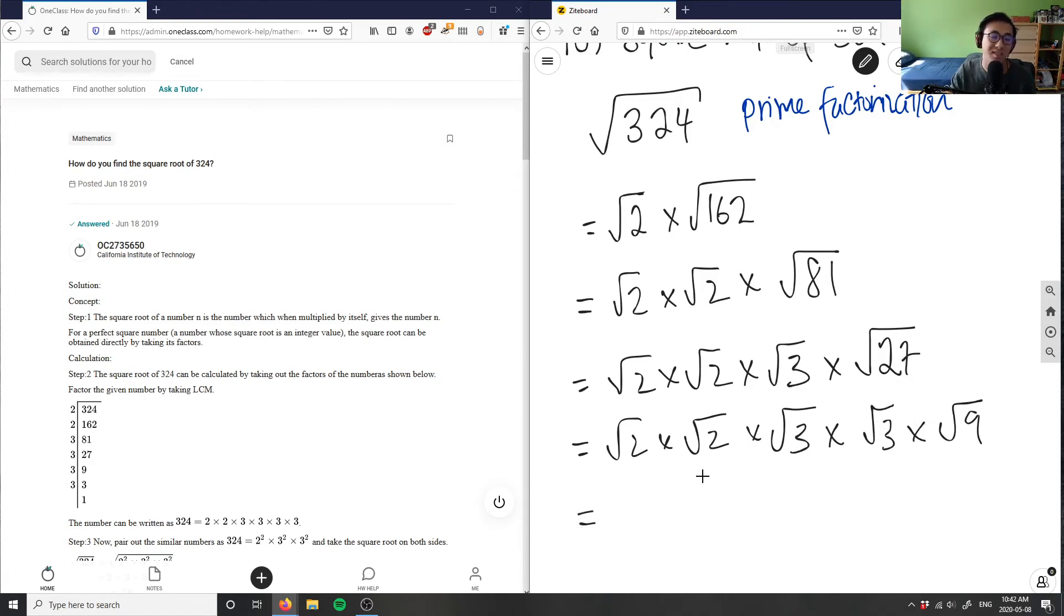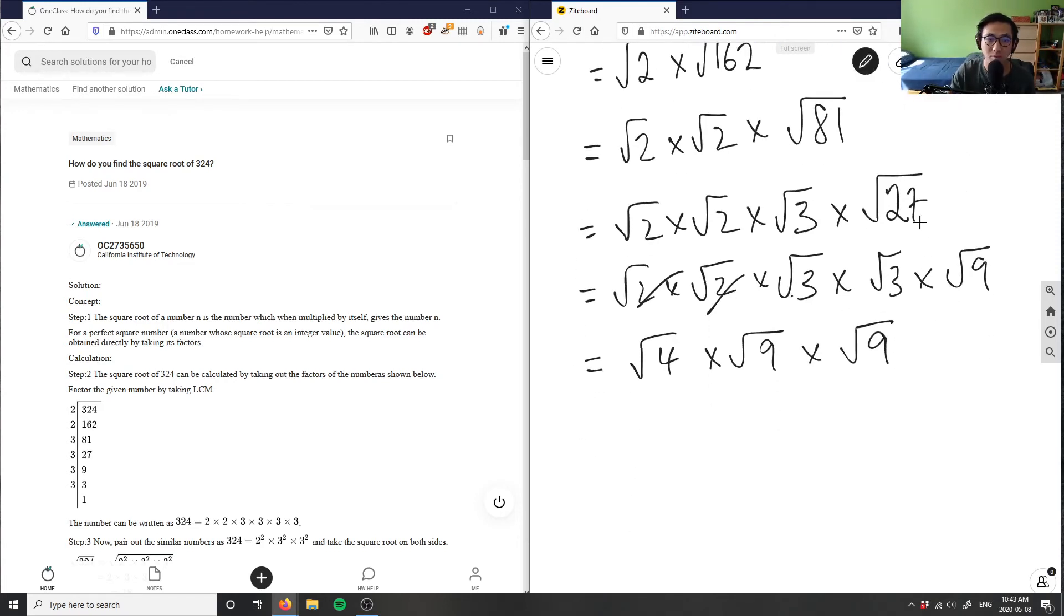Finally, what I can do is simplify this out. Root 2 times root 2 gives me root 4. Root 3 times root 3 gives me root 9 times root 9. This equals root 4 equals 2, times root 9 equals 3, times root 9 also equals 3. This is 2 times 3 is 6 times 3, which equals our final answer: 18.